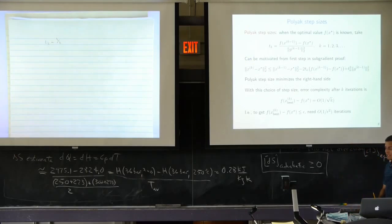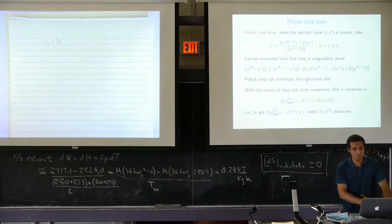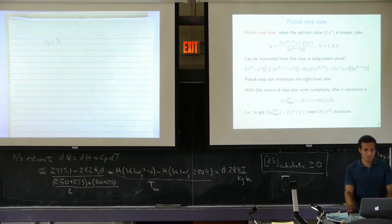There's one more choice of step size to mention: the Polyak step size. The formula looks funny because it requires knowing the optimal value of the function—f(x*)—which is a little weird. But it's not as weird as you may think because we're not asking for the minimizer x* itself, just the optimal function value. There will be an example where we know the optimal value but not the minimizer.